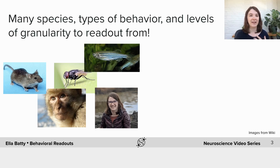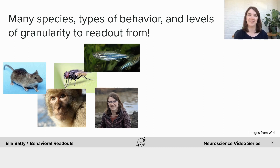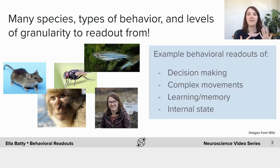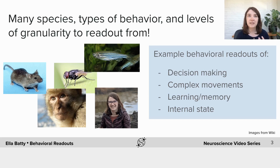We also care about different levels of granularity depending on the questions we're asking. So sometimes we just need to know what decision a monkey is making and sometimes we want to know about the tiny little nose twitches it's making. So all this means that there are a lot of different behavioural readouts in neuroscience. Instead of covering all of them, I'm going to give you a flavour of different types — going through some example behavioural readouts of decision making, complex movements, learning and memory, and internal state. I'll mostly focus on mice, but a lot of the ideas extend to other species as well.